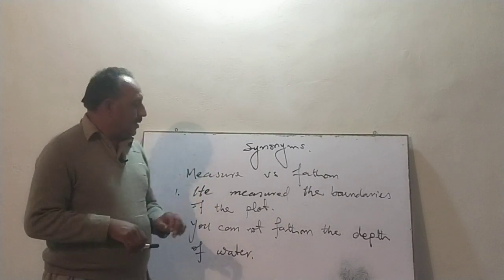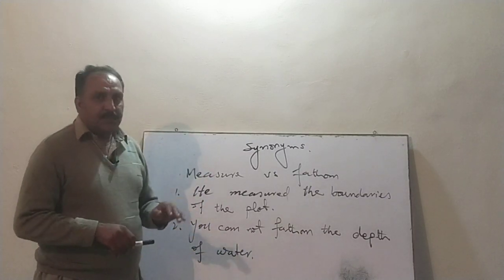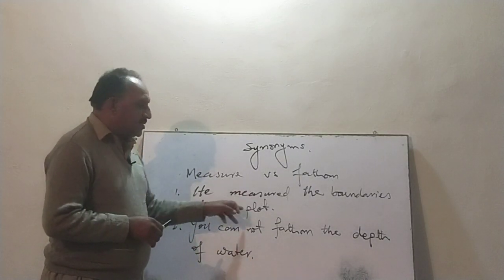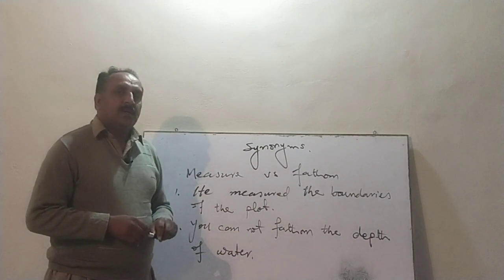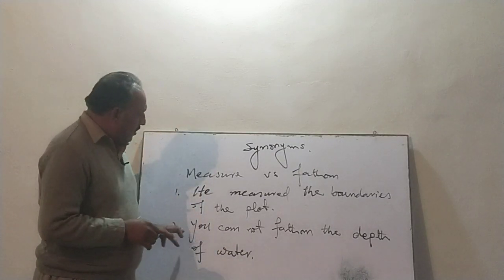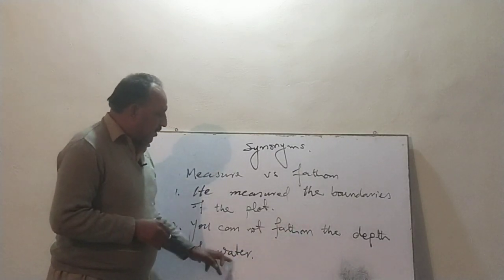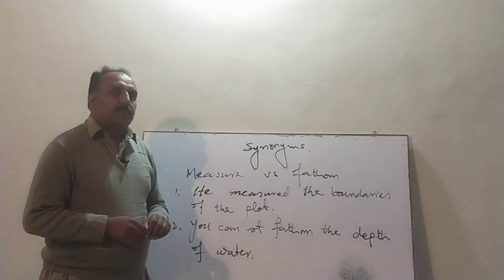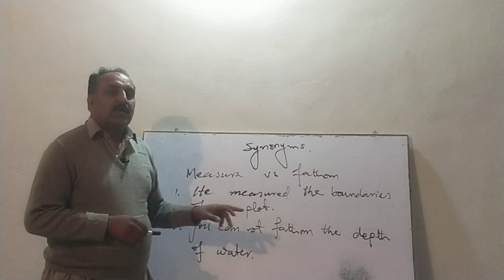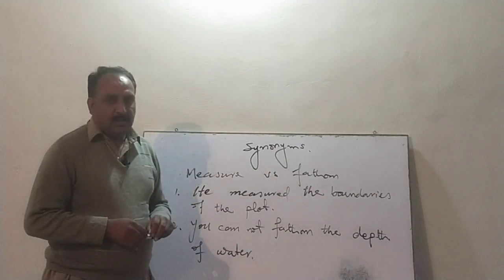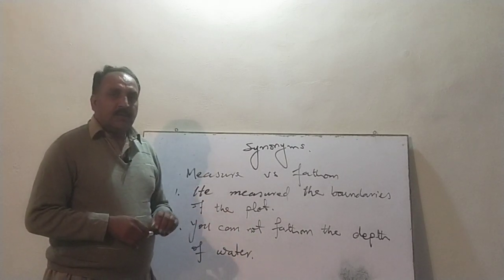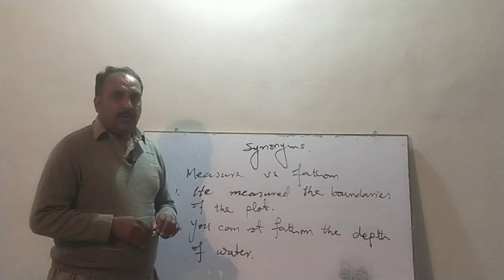'Measure' خوشکی پہ جب آپ ناپ طول کرتے ہیں — for example: 'He measured the boundaries of the plot,' یعنی اس نے plot کی boundaries کی پیمائش کی۔ 'You cannot fathom the depth of water' — تم اس پانی کی گہرائی کا اندازہ نہیں لگا سکتے، یا تم اسے ناپ نہیں سکتے۔ I hope you understand it.